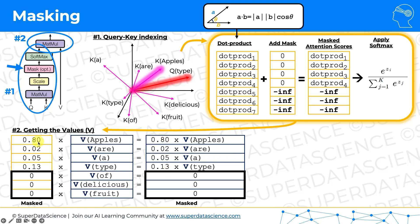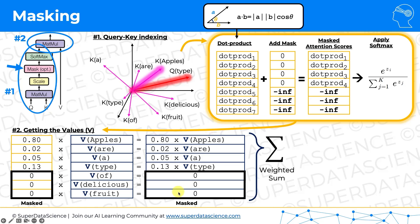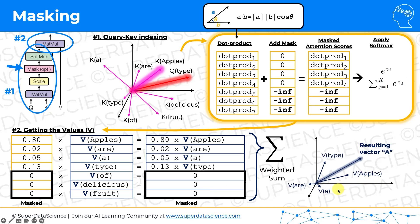We multiply by the V values of the vectors, as in normal attention. What we get is a weighted combination — the softmax gives values that add up to one, not necessarily a probability distribution in the predictive sense, but a weighted sum where the weights add up to one. The masked words get a weight of zero in this weighted sum, and in the end we get a context-aware vector representation for this word.